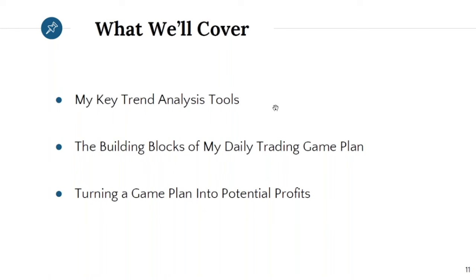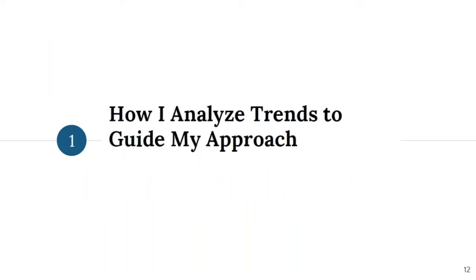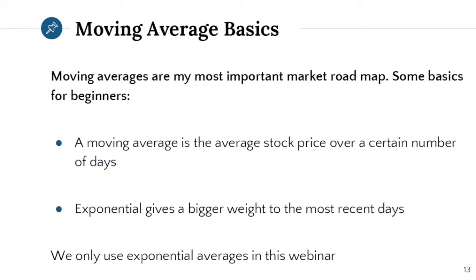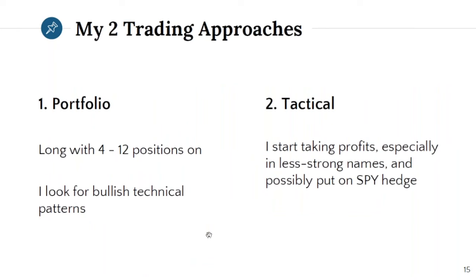We're going to cover my key trend analysis tools, because we all need to know what the trend is. We want to know what type of market we're in — are we in a strong market, a weak market, or a wishy-washy market? The tools that help me uncover that start with moving averages. This is a very basic topic — I'm going to go over the simplistic approach. A moving average is the average stock price over a certain number of days. An exponential moving average gives bigger weight to the most recent days.